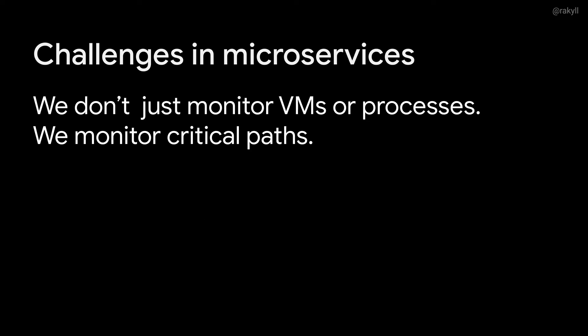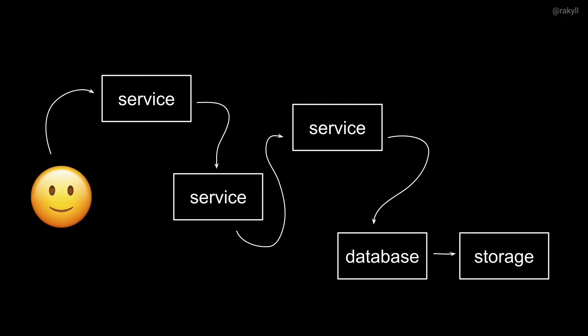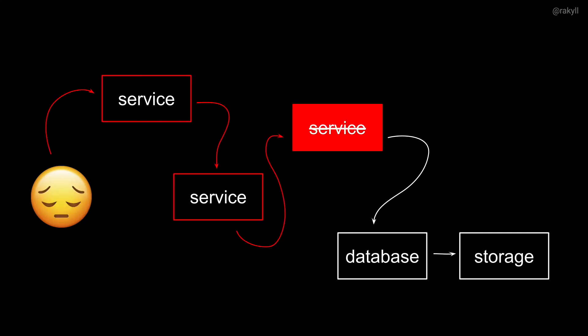In a microservices world, we don't only monitor VMs or processes — we care about the availability of services and the user's critical path as a whole. When a request comes in and goes through various services all the way down to storage, I don't primarily care which VMs are serving these requests. I only start to think about them when there's an outage or efficiency issue. When things go down, I want to understand what service or services caused the outage, and what I know about these services and their underlying resources to mitigate or resolve the issue.